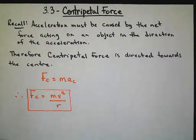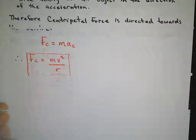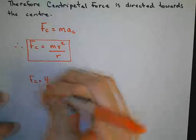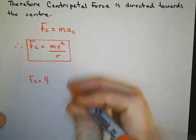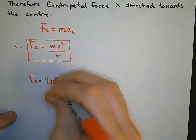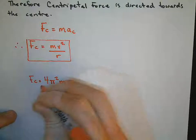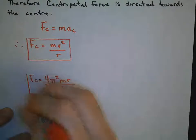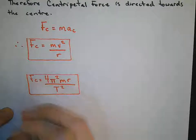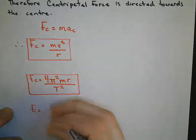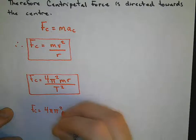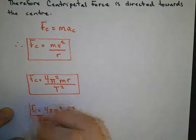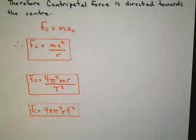We have mv squared over r. We have 4 pi squared mr all over t squared. And we could also have our centripetal force as 4m pi squared rf squared. The f squared comes from the fact that t equals 1 over f, because they are inverse relationships.